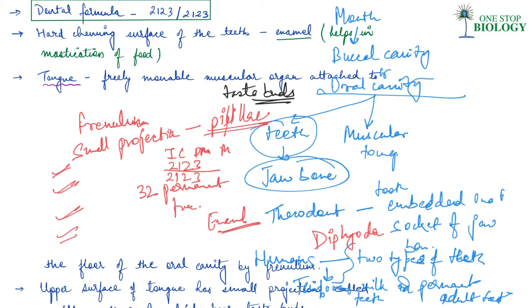This is all about the oral cavity, which includes the muscular tongue and the set of teeth. I hope you understood the oral cavity in the case of the human digestive system — it is the first part of the alimentary canal. If you have any doubts, please ask in the comments. If you understood the video, please like and share it, subscribe to the channel, and press the bell icon to get all the updates. Thanks for watching — see you in the next one, till then take care, bye.